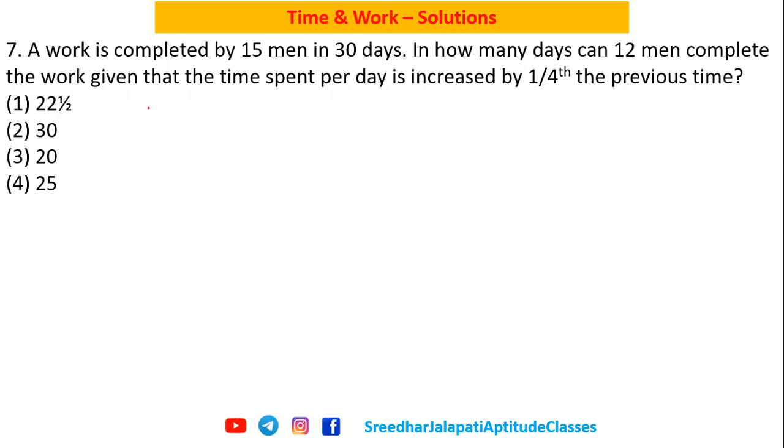Here is the solution for question number seven from time and work. A work is completed by 15 men in 30 days. In how many days can 12 men complete the work given that the time spent per day increased by one fourth of the previous time?